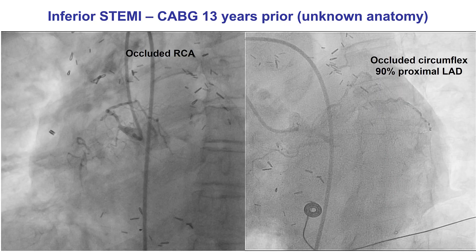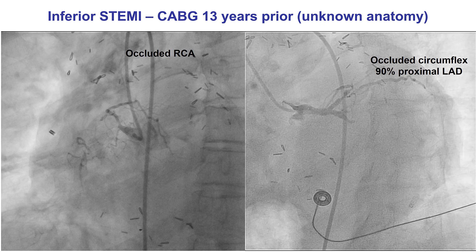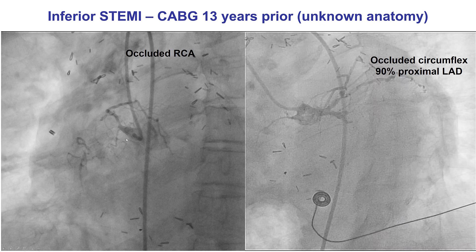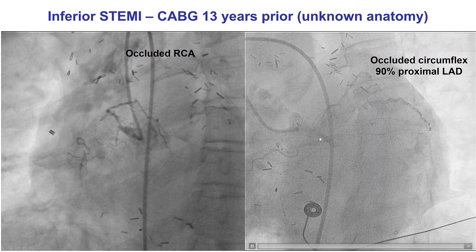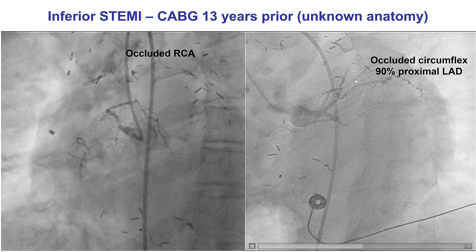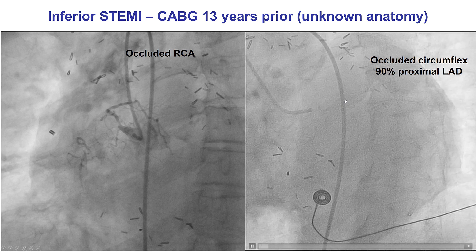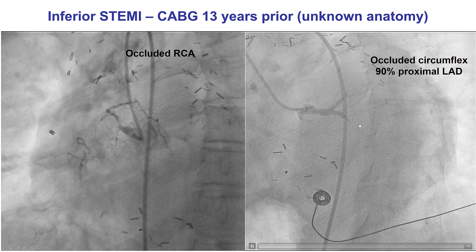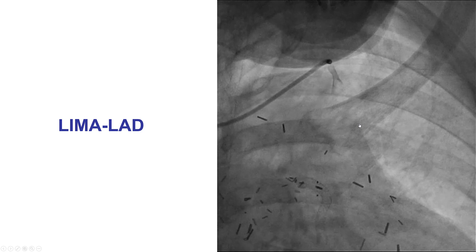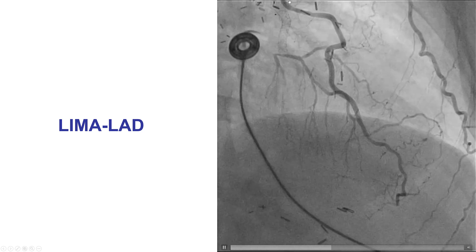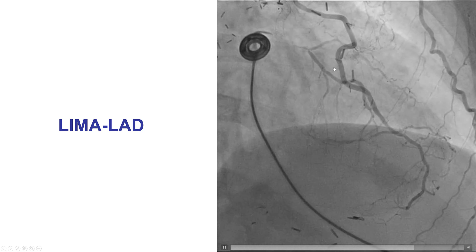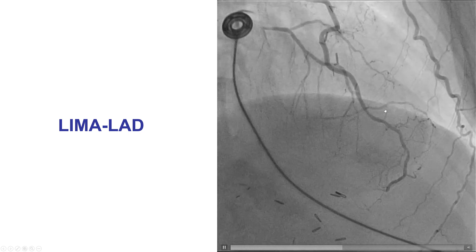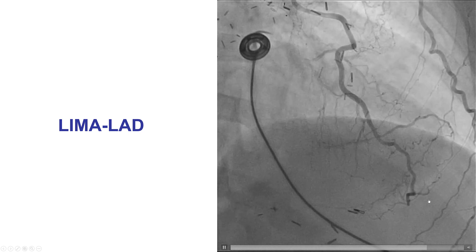The patient had previous bypass and presented with an inferior ST-segment elevation myocardial infarction. He did have a CTO on the right coronary artery, CTO on the circumflex, as well as a high-grade lesion with competitive flow into the LAD, as we can see here. His LIMA was patent, although he did have a large side branch and was supplying the LAD, which was also giving collaterals into a large obtuse marginal branch.